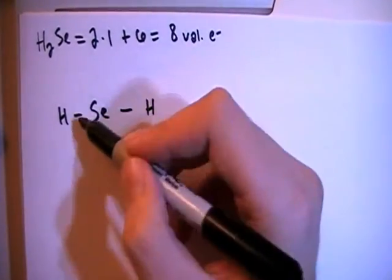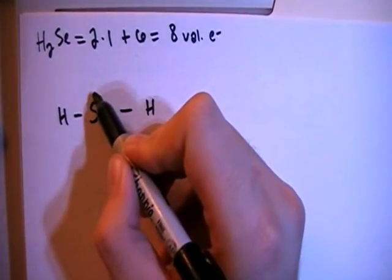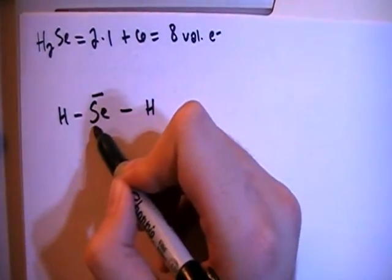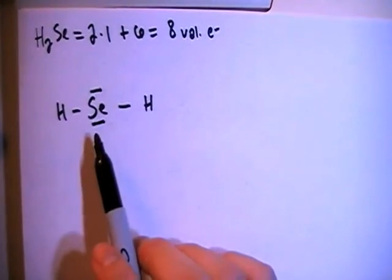Alright, so there's two, four electrons, and we have to do four more to make eight. So we're going to just go ahead and put two non-bonding pairs on the central selenium there. So that way the selenium has its full octet, full eight electrons.